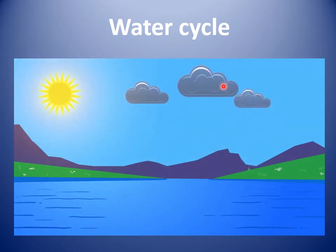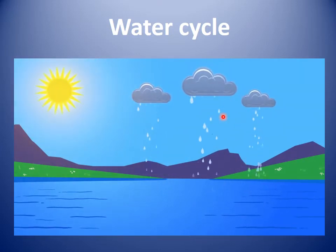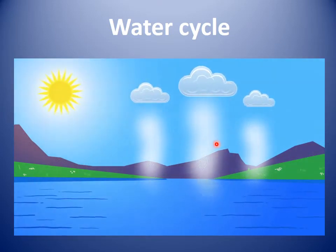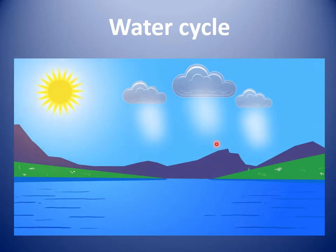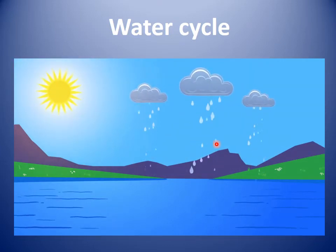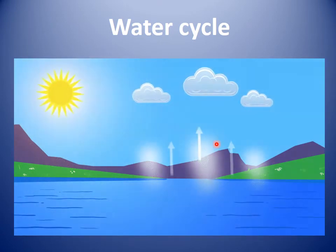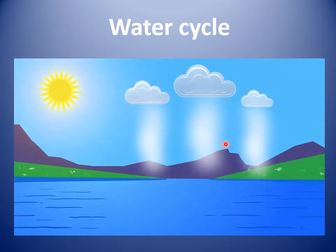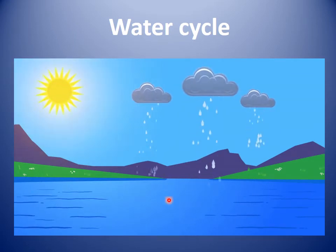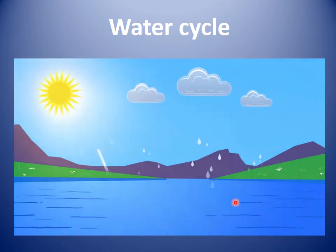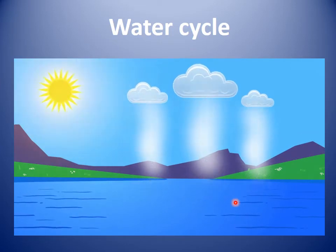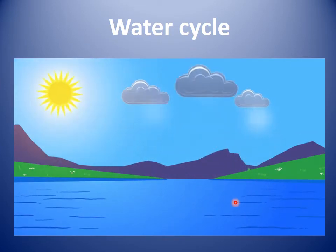After some time, when the cloud begins to fall down again as rain, this is called precipitation. Precipitation means falling down. After this, when the water goes back again to the sea or to the river, it goes back in groups. We call this collection.